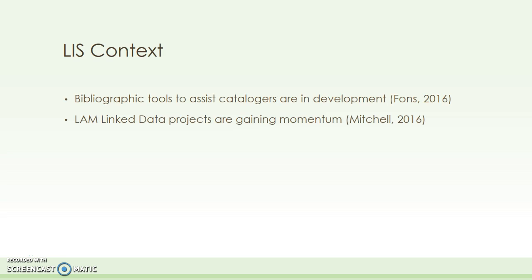Bibliographic tools to assist catalogers in generating and serializing data are currently in development. These include the Library of Congress's BIBFRAME project, the University of California at Davis's BIBFLOW project, and the Linked Data for Production project, which is a Mellon grant-funded project that also focuses on the technical aspects of implementing linked data in libraries. LAM institutions are embarking on linked data projects at an accelerated rate. As of 2014, there were 172 ongoing projects documented in an OCLC survey. The number and scope of the projects has grown so much in recent years that they can't all be effectively summarized or analyzed in one particular scholarly document.